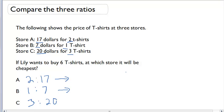We want equivalent ratios that all have the same number of t-shirts. What do we want that number to be? Six. So let's change the first ratio. In order to get a ratio of six to something, I have to multiply this ratio by three. Two times three gives me six, seventeen times three gives me fifty-one.